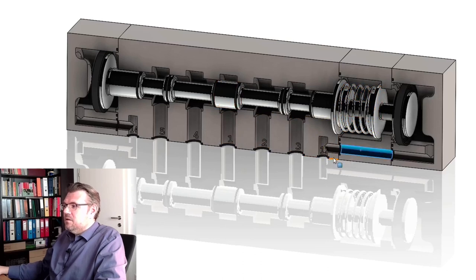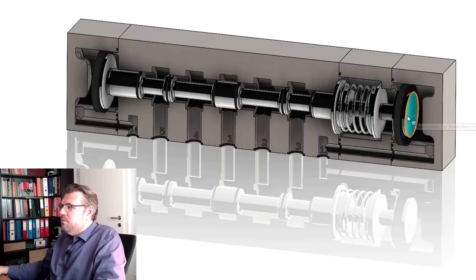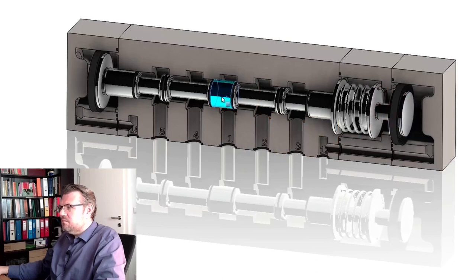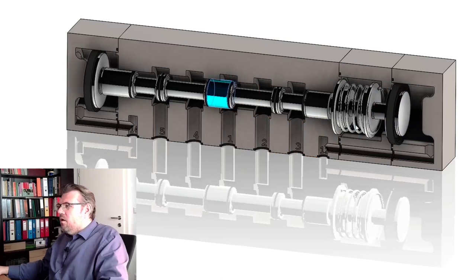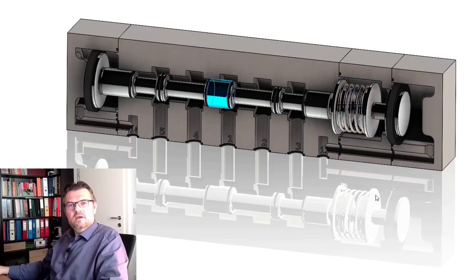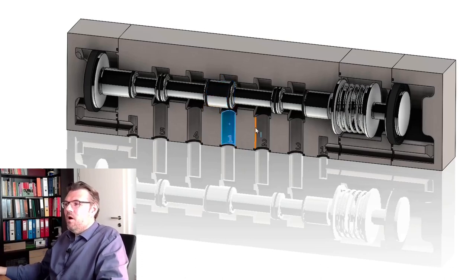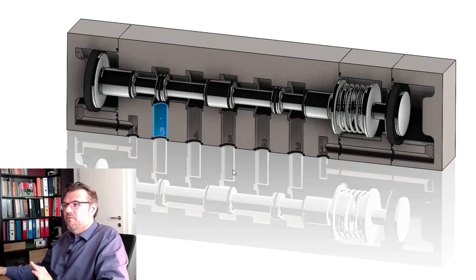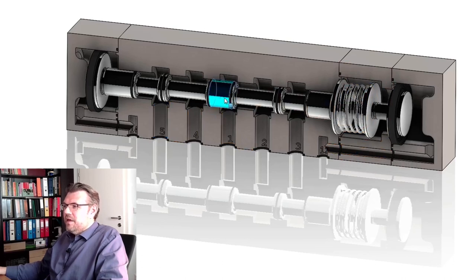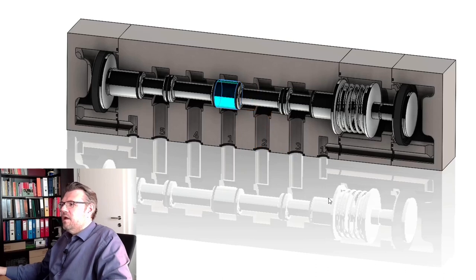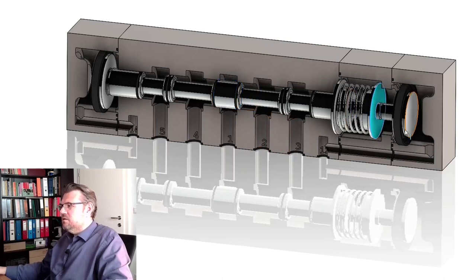Let's say we apply air at port 1-2. We will get pressure and move the piston. You can see the disc is loading the spring. Now ports 1 and 2 are connected, and ports 4 and 5 are connected. Everything else is separated. Once we release the pressure, the spring will lose its tension and move the piston back to the middle position.